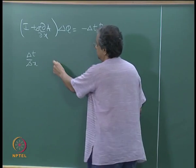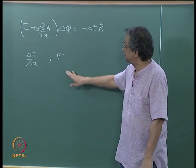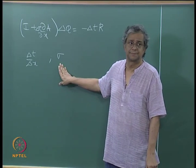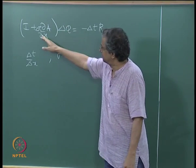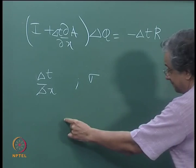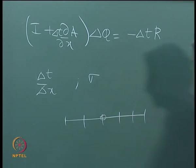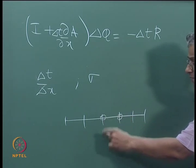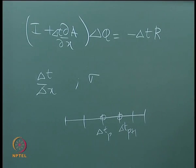You could pick a sigma value so that delta t will not be the same from point to point. In fact, for any point in this system of equations, you could pick a delta t here which is different from the delta t at the adjacent point — a delta t at point j and a different delta t at j+1. This is called local time stepping.